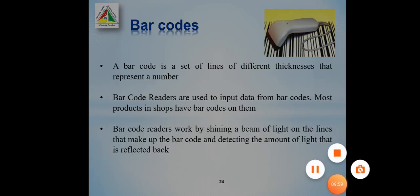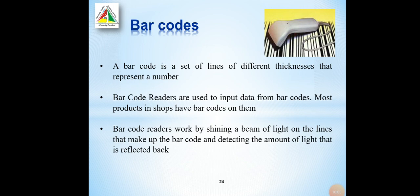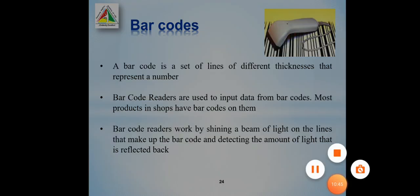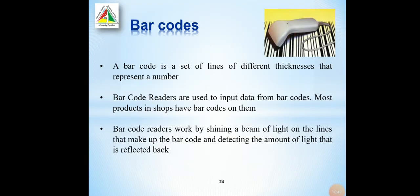Another common input device is the barcode reader. A barcode is a set of lines of different thickness that represent a number. Barcode readers are used to input data from barcodes. Most products in shops have barcodes on them. Barcode readers work by shining a beam of light on the lines that make up the barcode and detecting the amount of light reflected back. We can see barcodes when we purchase any product from a supermarket or store; they help detect the price and product name. This is the main use of barcodes.